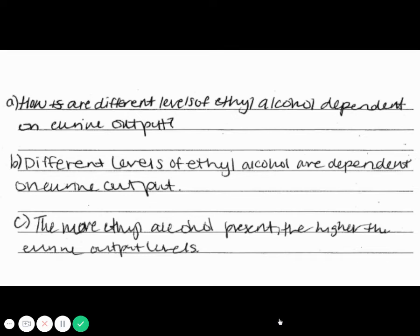Okay, so how many points do we give this? Well, let's see. How are different levels of ethyl alcohol dependent on urine output? Well, that's actually got cause and effect reversed, doesn't it? Urine output depends on different levels of ethyl alcohol. So no point there.